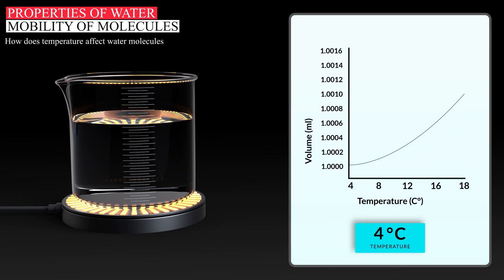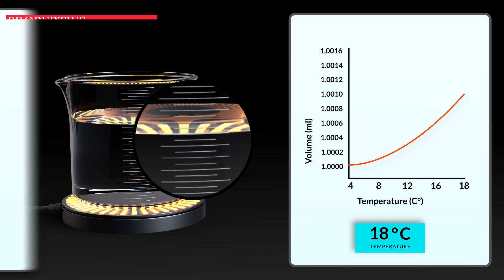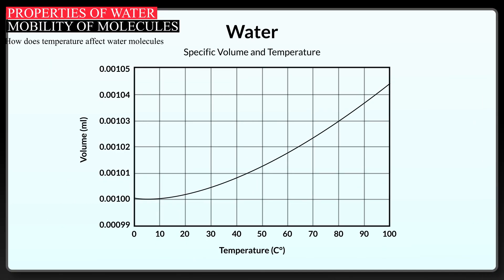This graph shows how the volume of water grows as the temperature of the water rises from 4 degrees Celsius to 18 degrees Celsius. This graph shows the increase in water volume over a wider temperature range.